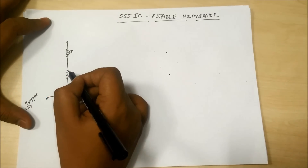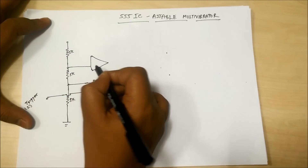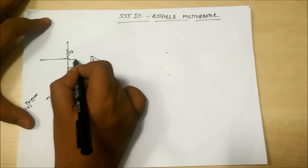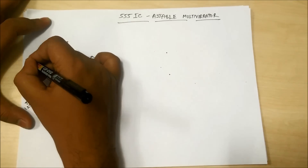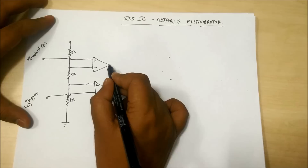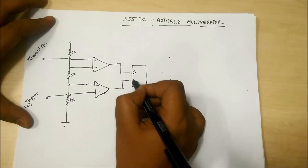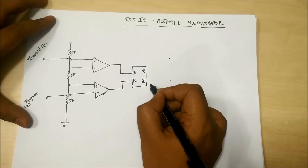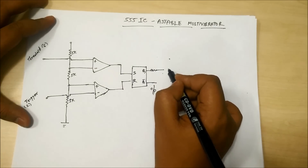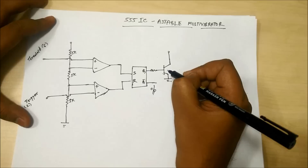The voltage after the second 5kΩ resistor, which is 2/3 VCC, goes to the upper comparator's inverting terminal, and the non-inverting terminal connects to pin number 6, called the threshold pin. The output of both comparators is given to an SR flip flop. Q-bar is the actual output, and Q through a resistance goes to the base of a discharge transistor, with pin number 7 as the discharge pin.